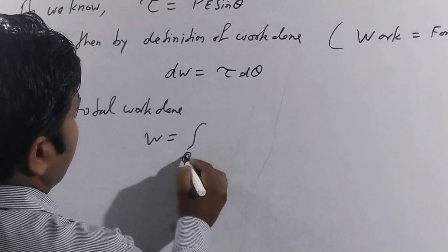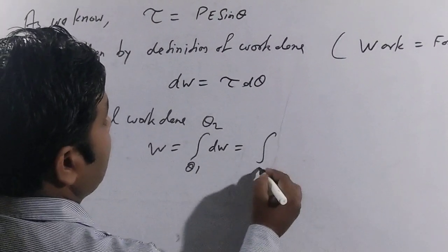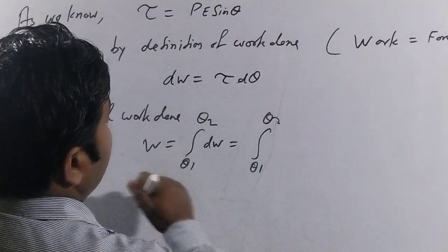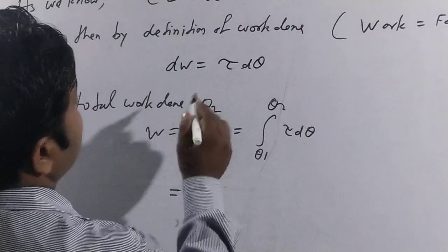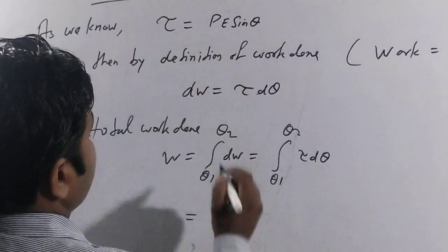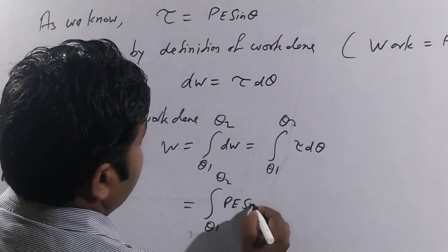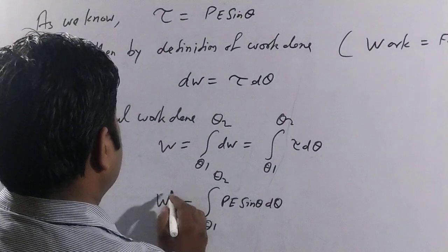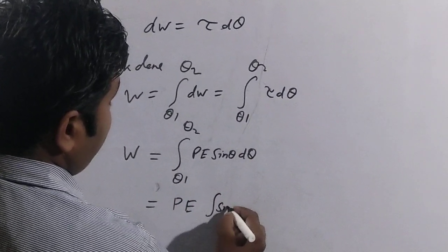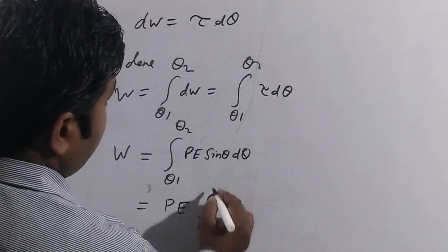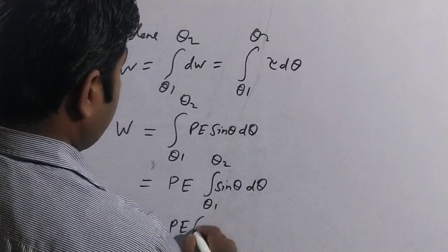So the total work done W = ∫(θ₁ to θ₂) dW = ∫(θ₁ to θ₂) τ dθ = ∫(θ₁ to θ₂) pE sinθ dθ. Here pE is a constant term and is taken out of the integration. The integration of sinθ dθ gives −cosθ.